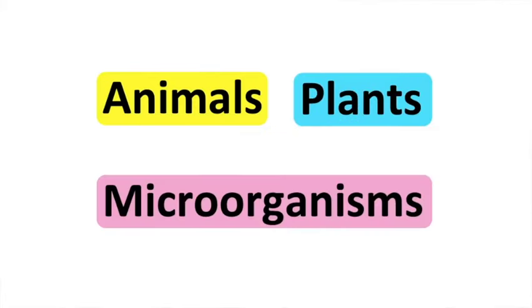All living things can be put into three main groups: animals, plants, and microorganisms. They have different key features that help us differentiate between them. For example, animals can't produce their own food — they get their energy by eating other animals or plants. Plants can produce their own food, and microorganisms are very small. In this video, we will look at the animal group.